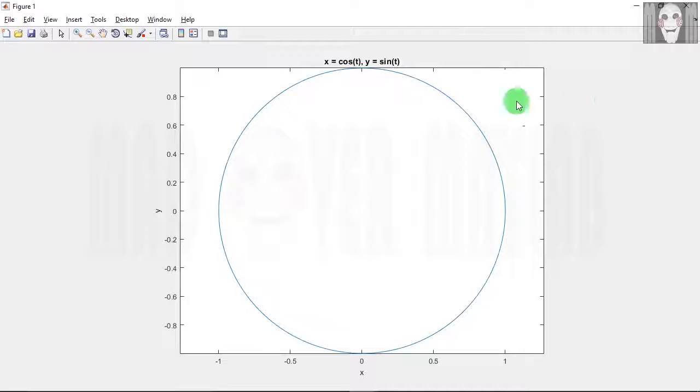So this is the plot that you get. Now this plot looks like a circle by default, so you need not use the axis square command in this case.